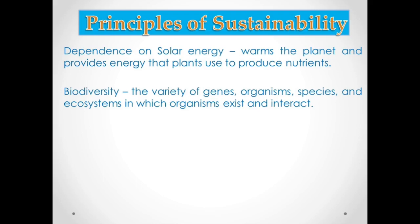In biodiversity, we will also talk about the food chain and food web. The food chain includes the producer, first-order consumer, and decomposer. The interconnecting food chain is what we call the food web. We will talk about that later on as we go deeper into biodiversity, to learn more about the interaction of living organisms with the environment.